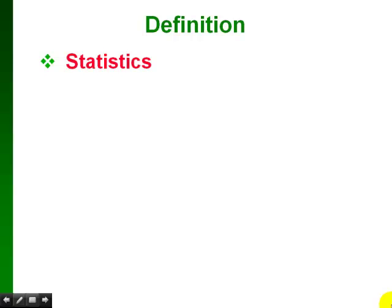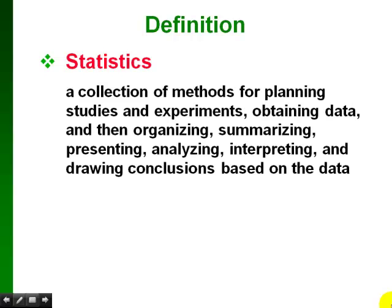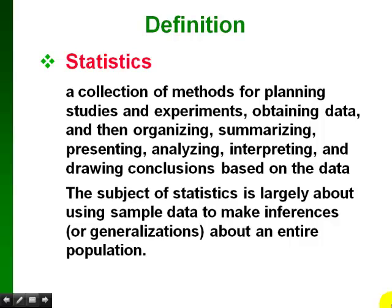The definition of statistics is that it's a collection of methods for planning studies and experiments, obtaining data, and then organizing, summarizing, presenting, analyzing, interpreting, and drawing conclusions based on the data. The whole subject of statistics is mostly about using sample data — from a smaller group — to make inferences or generalizations about an entire population, which is the larger group.